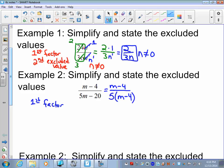The second step is to name the excluded values. So what values, what numbers would make, could we put in for m that would make the denominator 0? Well in this case, if m equaled 4, 4 minus 4 is 0, times 5 is 0. That would make the denominator 0. So therefore, m cannot equal 4. That's an excluded value.